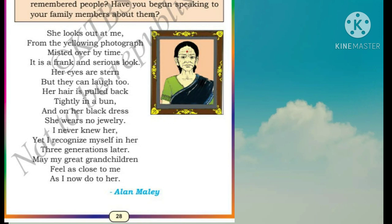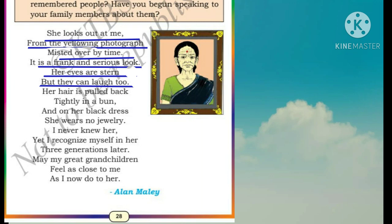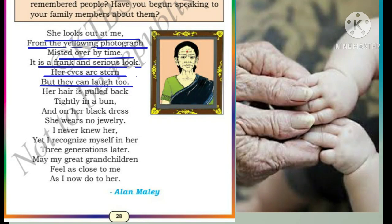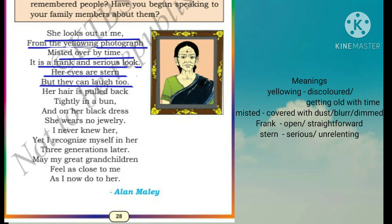Listen carefully. 'She looks out at me from the yellowing photograph, misted over by time. It is a frank and serious look. Her eyes are stern, but they can laugh too.' Children, 'she looks out at me' — is she really looking from the photograph? No. The poet feels that his grandmother is looking out at him, seeking him, searching him, showing her affection. The poet feels very close to her by seeing her eyes in the photograph. 'Yellowing' means the photograph has become discolored because it has turned yellow over a long period. 'Misted over' means it has been covered with dust, blurred and dimmed because of time — he is seeing this photograph after a long time.